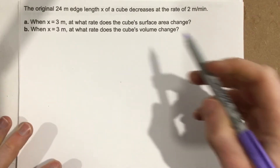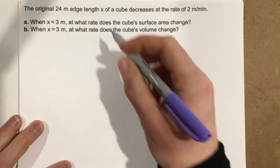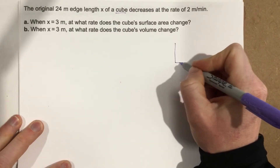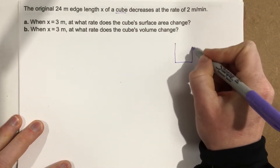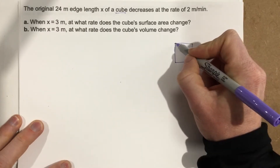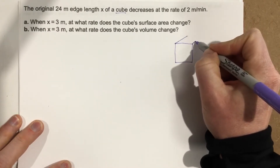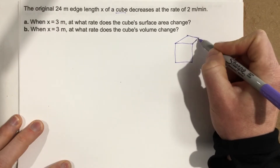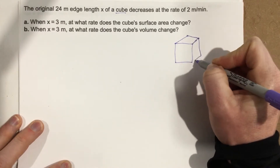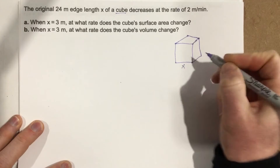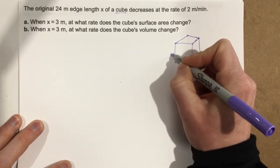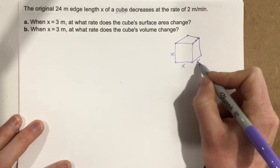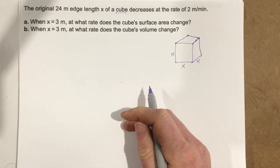In this problem we're talking about a cube. A cube has the same side lengths — this is a terrible looking cube, but we're going to go with it. It's got the same side length, so we've got a width, a height, and a length, and all three of these are the same X value.